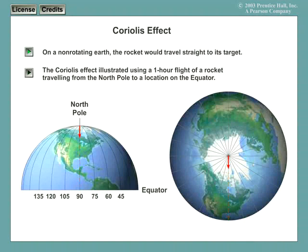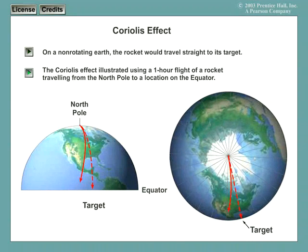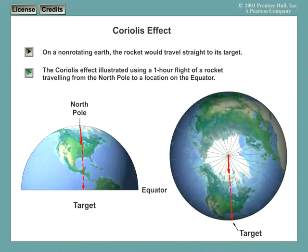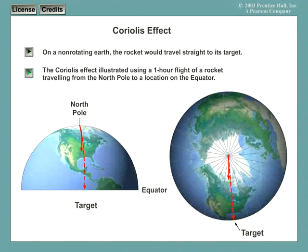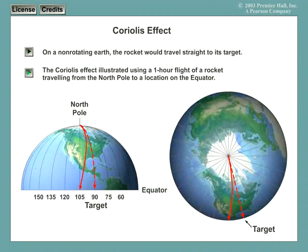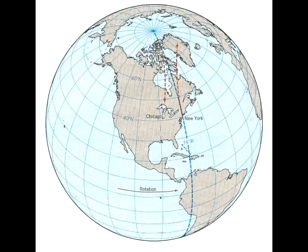The Coriolis force is the deflecting force of the earth's rotation. A moving object is apparently deflected to the right from its original course in the northern hemisphere. A moving object on the southern hemisphere is deflected to the left. The explanation for this phenomenon is the inertia of the object, which means that the object retains its original radial component of the movement.